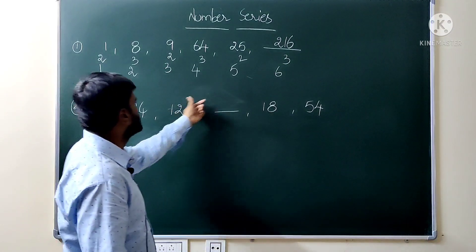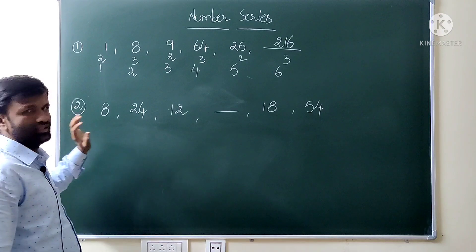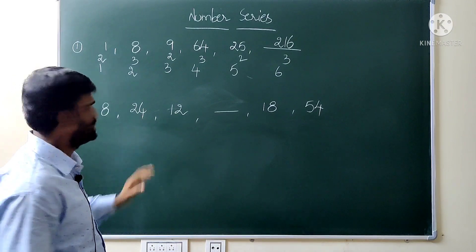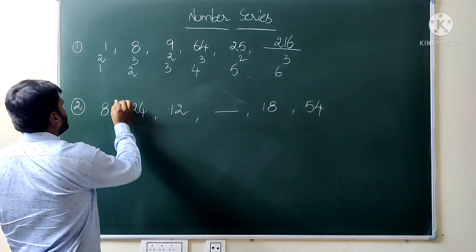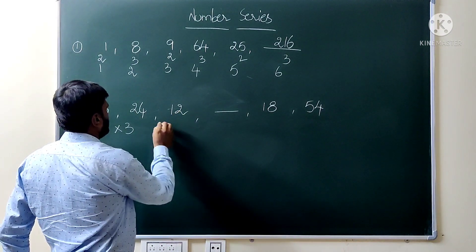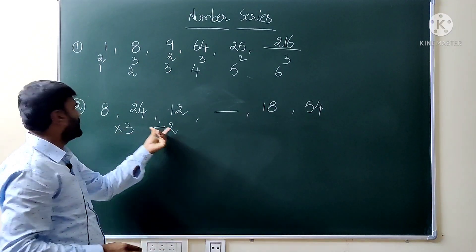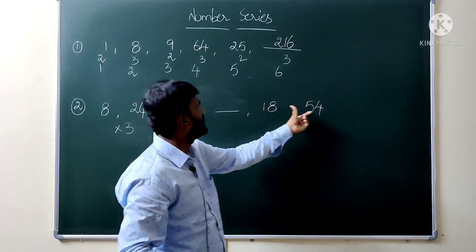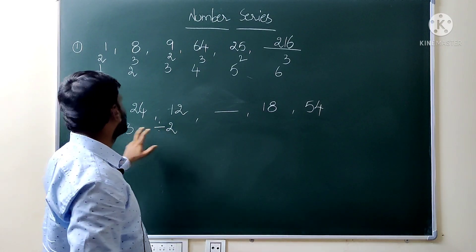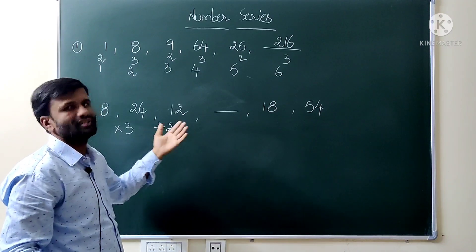So 8 to 24 is increasing. Then decreasing, then increasing again, then decreasing. Let's check addition and subtraction first — logical checks. Going for some other logic: 8 to 24, that is 8 times 3 equals 24. Then 24 to 12: 24 divided by 2 equals 12. So the logic is multiply by 3, then divide by 2. Same logic continues. Applying this logic — but wait, that gives a wrong result for number one.